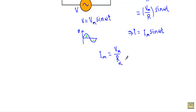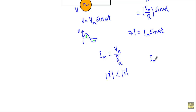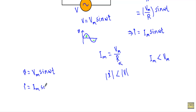In a circuit, we use resistance to control the current flow. To control the current flow, we set the value of the resistor greater than 1. As a result, the magnitude of the alternating current I will always be less than the magnitude of the alternating voltage, meaning Im will be less than Vm. So, applying voltage V equal to Vm sin omega t results in alternating current I equal to Im sin omega t in this pure resistive circuit.